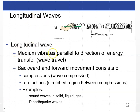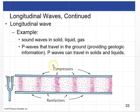For longitudinal waves, the medium vibrates parallel to the direction of energy transfer. Like a slinky pushed back and forth along its length, you get compressions where the slinky is compressed and rarefactions where it is stretched out. Examples include sound waves in solid, liquid, and gas, and P earthquake waves. The wave travels to the right as compressions of higher density and pressure alternate with rarefactions of lower pressure and density. The wavelength is the distance between successive compressions or successive rarefactions.